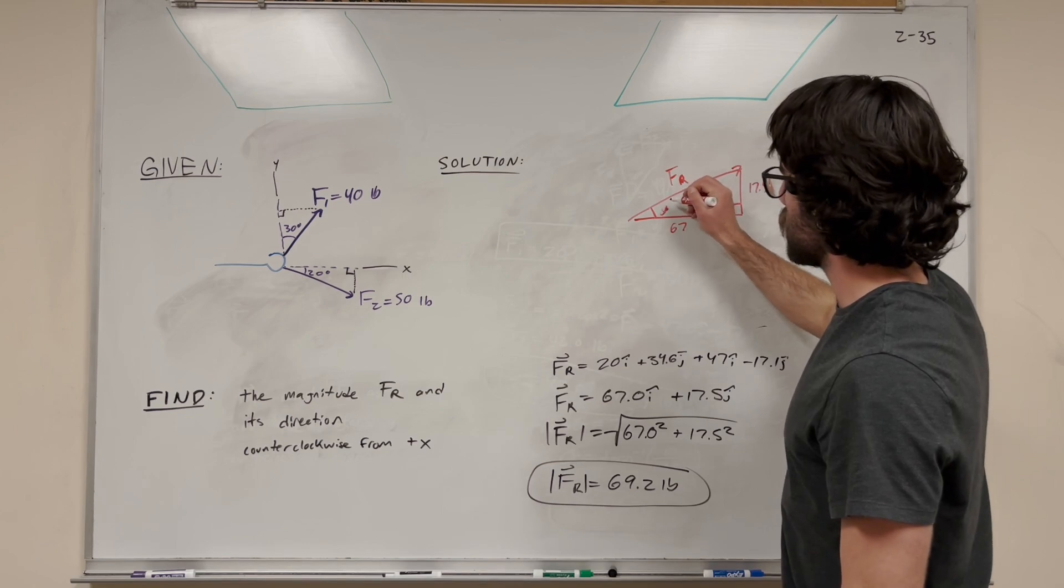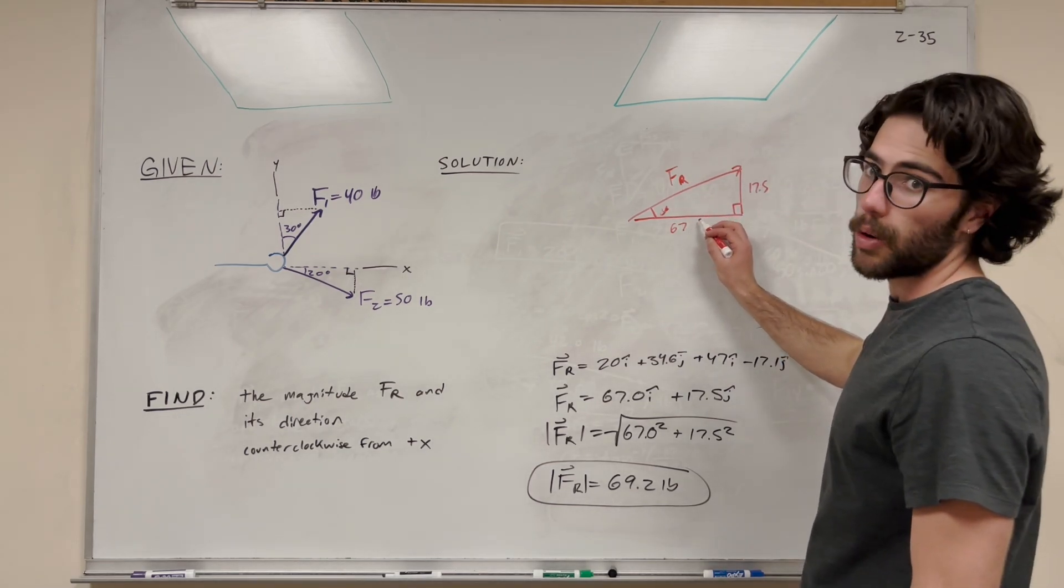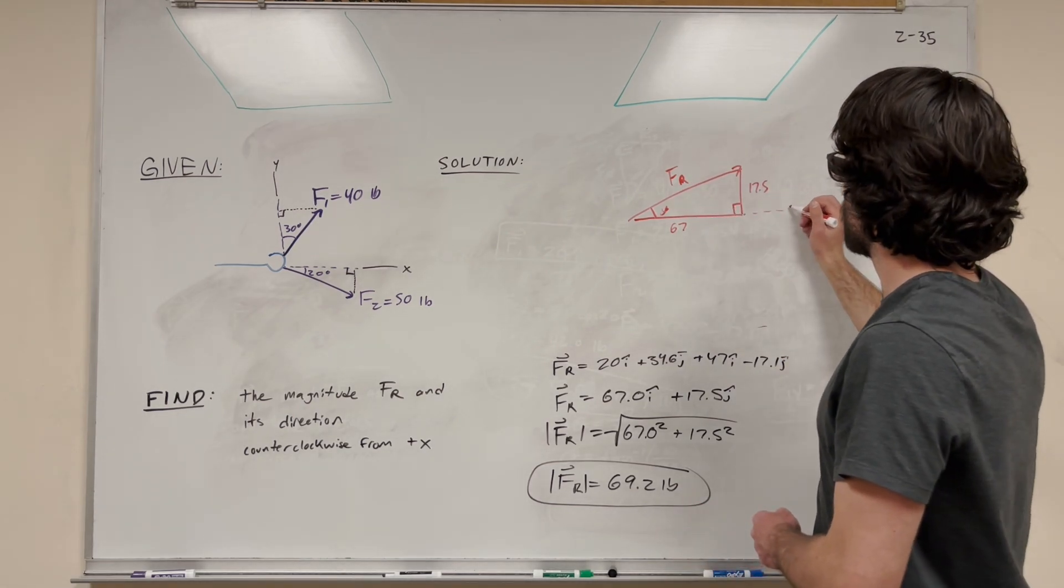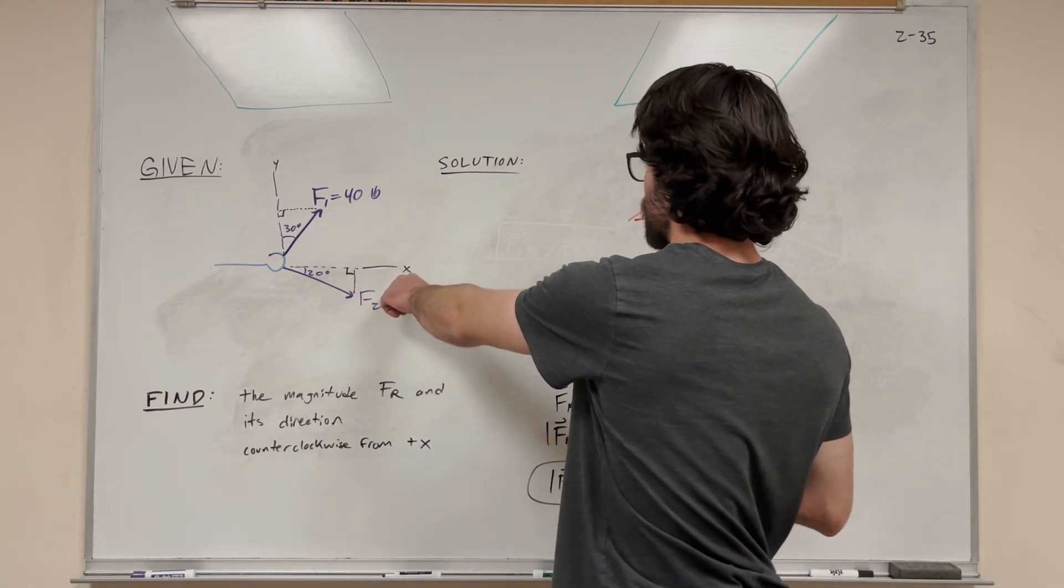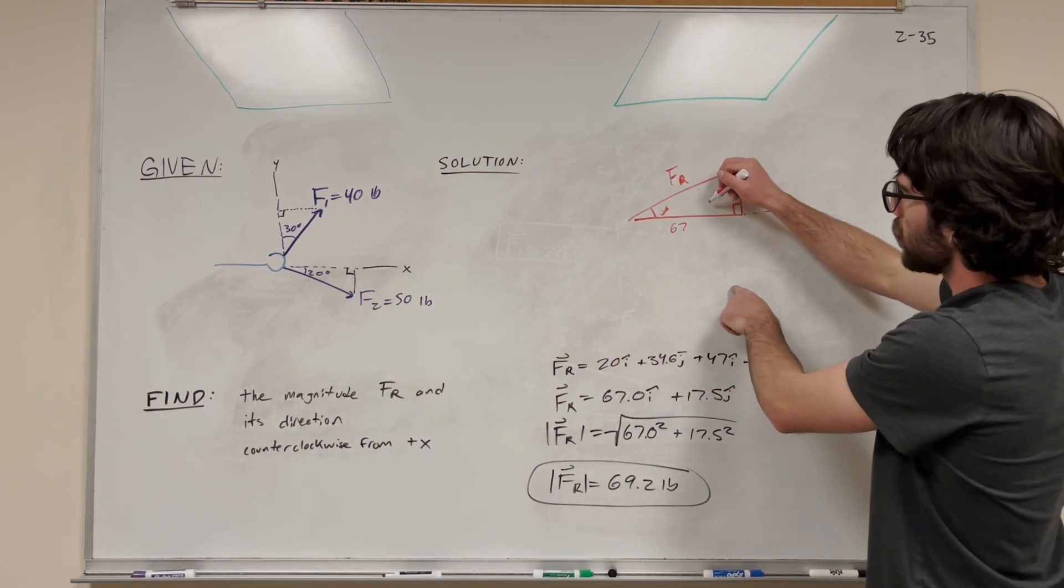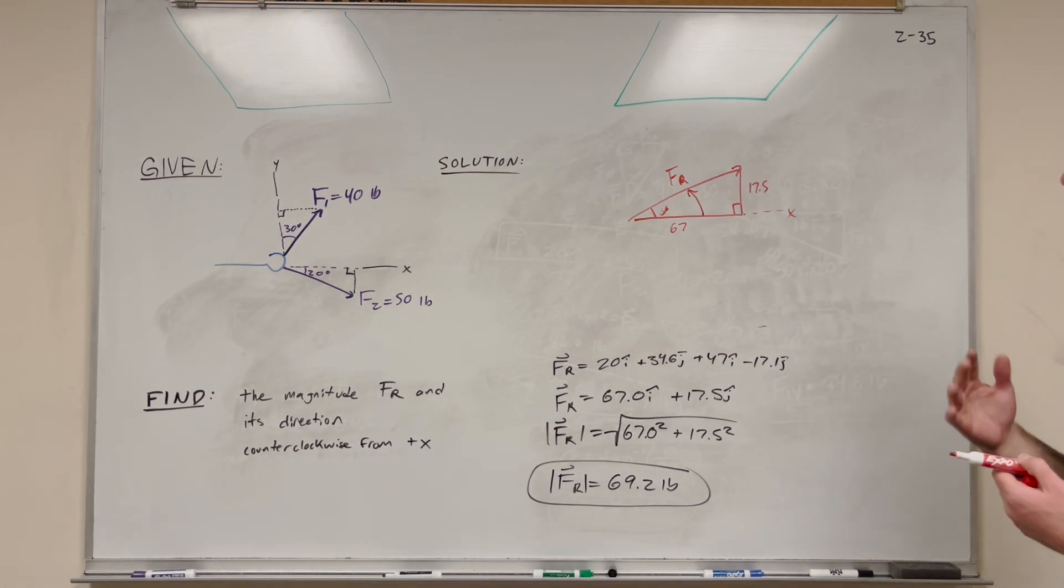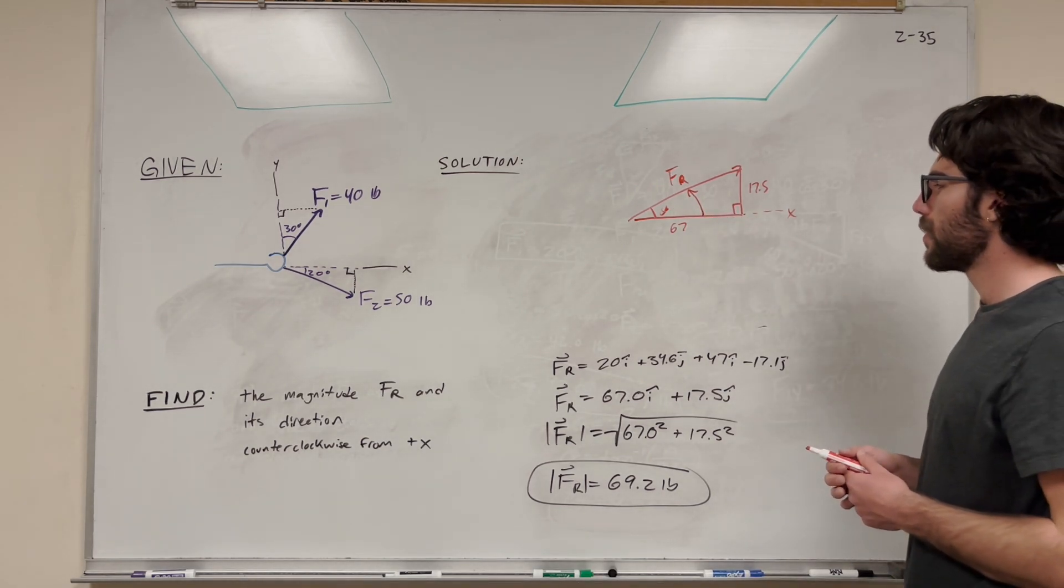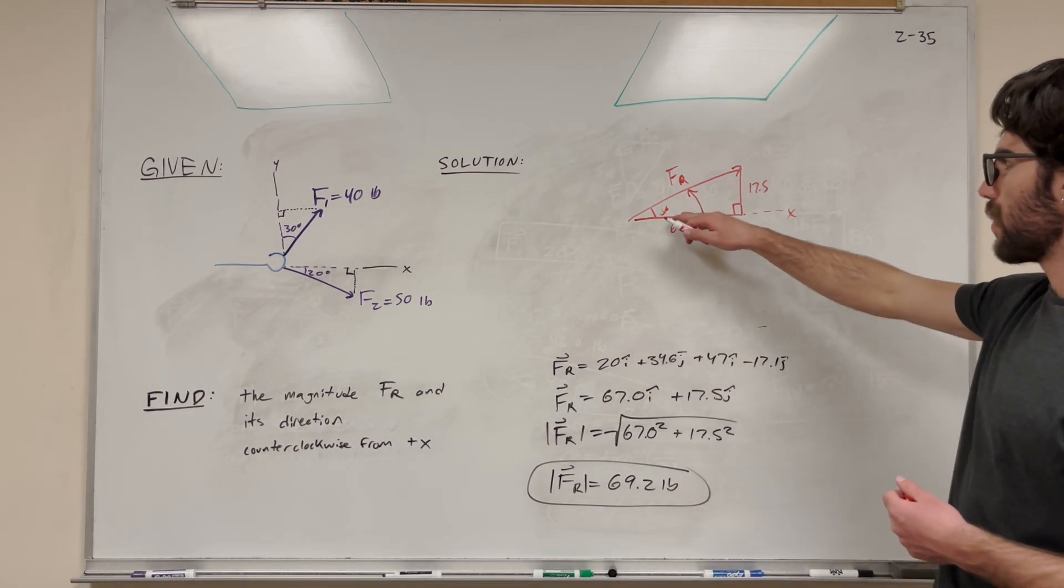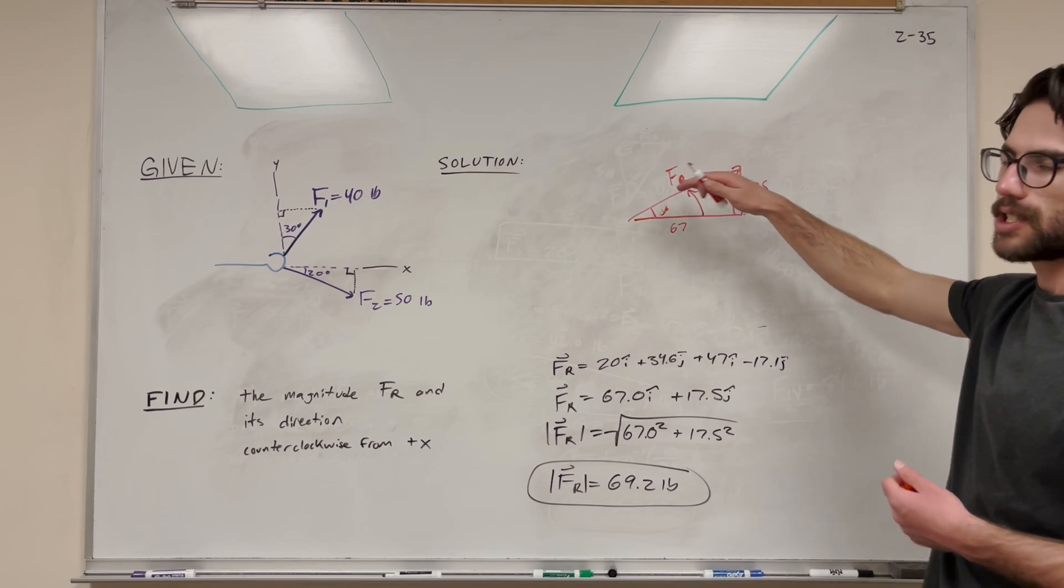And this is our theta. So this is the theta we're solving for because it's counterclockwise from the positive x-axis. So here's our positive x-axis, same as here. We're going counterclockwise, which is this direction, from that. So that's why this is the theta that we're looking for. And again, we find force resultant by doing a squared plus b squared equals c squared.